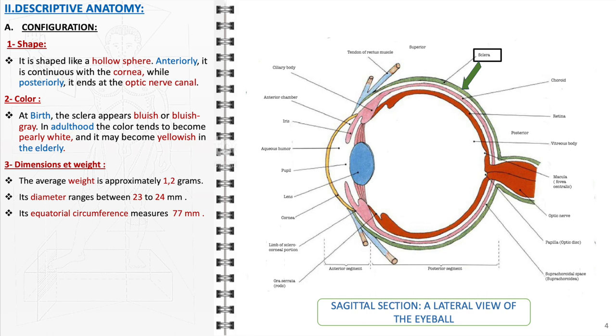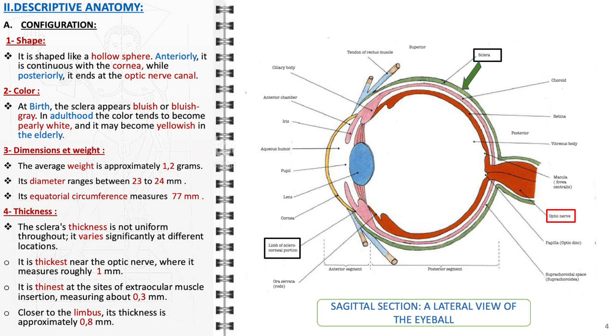A noteworthy feature of the sclera is its variable thickness. The thickest region is near the optic nerve, where it reaches around 1 millimeter, while it is considerably thinner at the sites of extraocular muscle insertion, measuring about 0.3 millimeters, closer to the limbus.